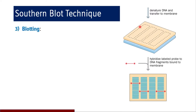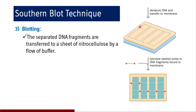Then the separated DNA fragments are subjected to blotting — transferred to a sheet of nitrocellulose by a flow of buffer. The gel is attached to the nitrocellulose paper, and by the flow of buffer the DNA fragments are transferred from the gel onto the nitrocellulose paper. This is simply a transfer of the material of interest to nitrocellulose paper for the further step of hybridization — that is why it is called a blot transfer technique.